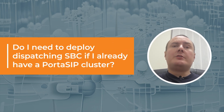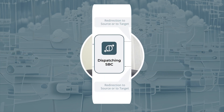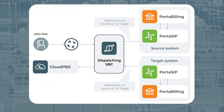Do I need to deploy DispatchingSBC if I already have a PortoSIP cluster? Yes. The DispatchingSBC will link the systems in dual version mode and it is required to deliver calls across systems. It knows in what system the customer record is located and delivers the call there. The DispatchingSBC is deployed on the target system, meaning the release of PortoSwitch you want to migrate to. You can configure it on an on-premise server or on a virtual server.